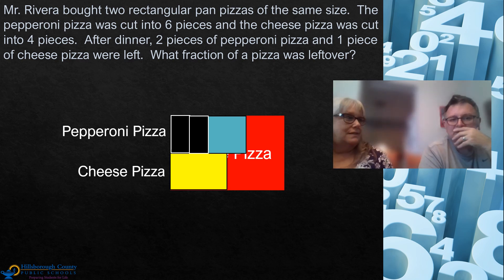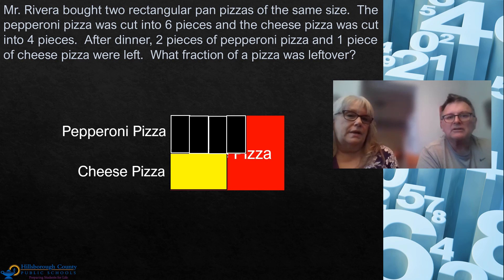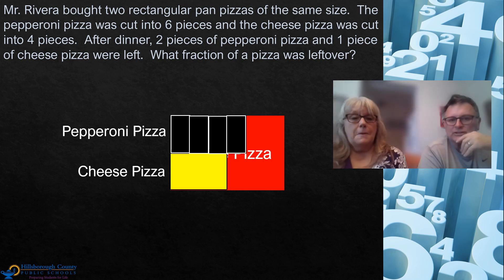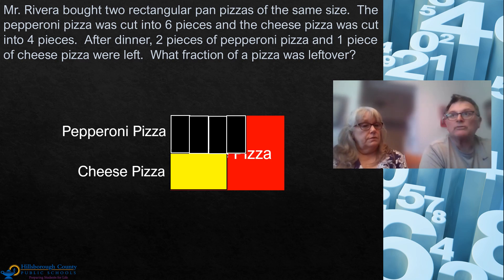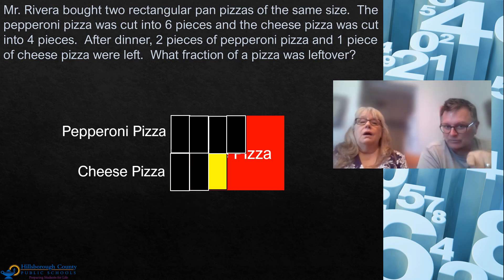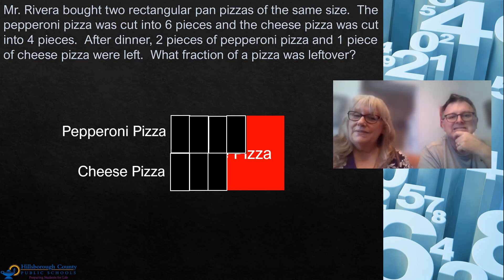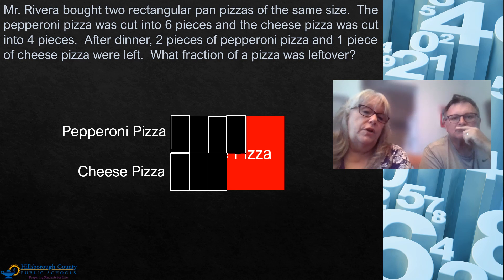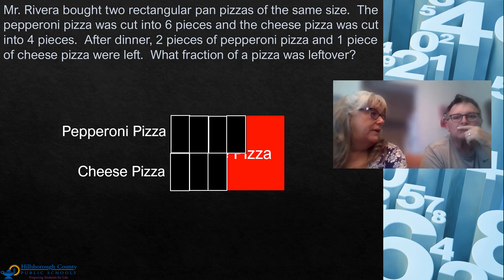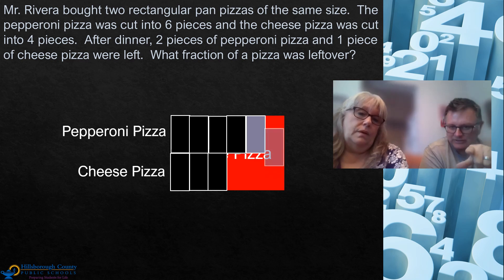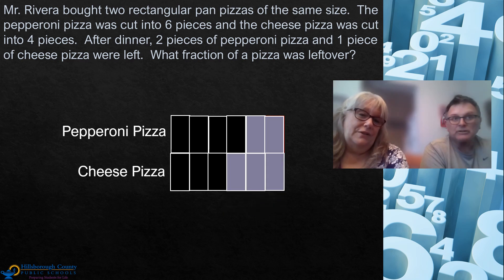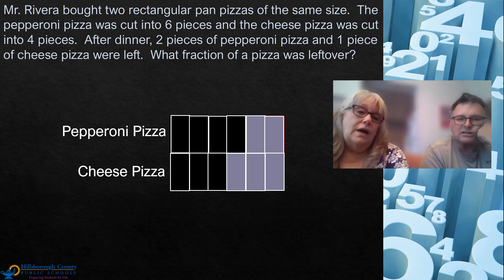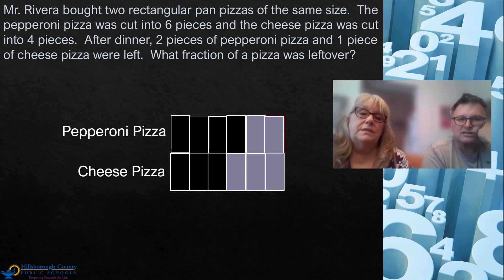It worked! Two twelfths is the same as one sixth, and I've got two more twelfths for the other sixth — it's really looking like an array. And for my fourth, four times three is twelve, so there should be three slices that go on that fourth. I have to figure out how many pieces make a whole pizza to know what those seven pieces represent as a fractional amount. There are going to be twelve slices on that whole pizza, so the common unit is twelfths — and seven of those pieces are what I'm counting. I now have four pieces of pepperoni pizza and three pieces of cheese pizza left over, cut into equal-sized pieces.